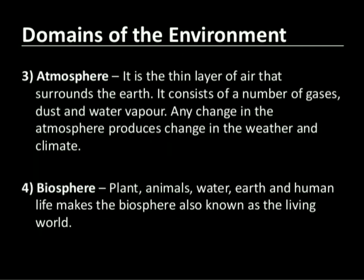Next is atmosphere. Here 'atmo' means air and 'sphere' means layer. Atmosphere is a layer of air which surrounds the earth. Air is the mixture of many gases, for example: nitrogen, oxygen, helium, ozone, carbon dioxide, etc. Nitrogen and oxygen are the most abundant gases found in the atmosphere. All the gases are useful to us in various ways. Dust particles and water vapors are also found in the atmosphere.